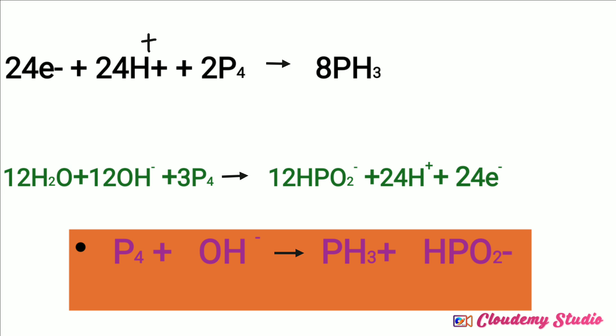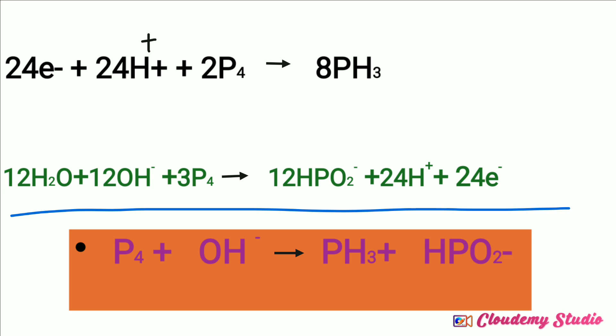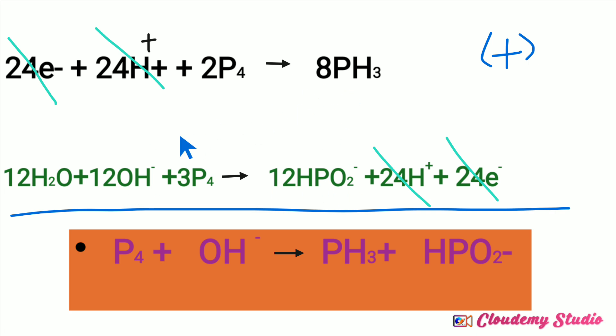Now we add both half-reactions together. Same substances on opposite sides are cancelled by subtracting. The 24 electrons on both sides cancel. The 24 hydrogen ions on both sides also cancel. We check if there are any other same substances on both sides — there are none.